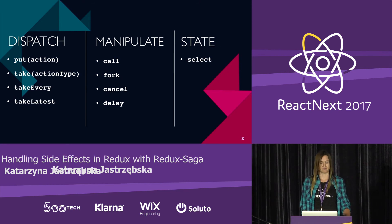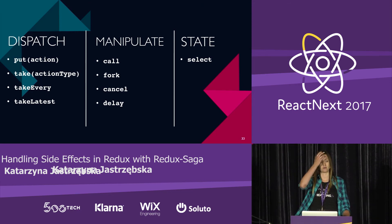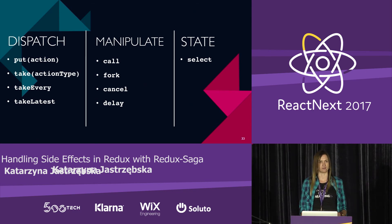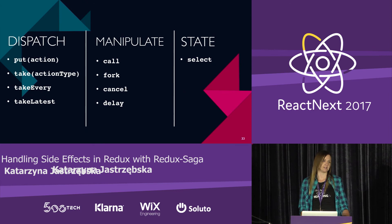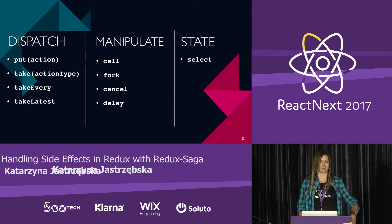Another section covers effects for manipulating other generators. The most important ones: `call` — which calls a generator and waits until the called function or generator finishes executing. Then there is `fork` — a special effect that forks a generator, giving you a reference to it. With that reference you can, for example, cancel it — so yes, you can cancel an asynchronous operation with Redux Saga.